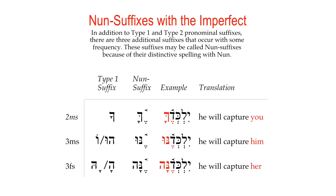Imperfect verbs are really easy to identify with pronominal suffixes, and imperfect verbs in general occur more frequently with pronominal suffixes than perfect verbs. When it comes to the addition of pronominal suffixes to the imperfect verb, there's one extra feature to study: the imperfect with noon suffixes. In addition to type 1 and alternate type 1 pronominal suffixes, there are three additional suffixes called noon suffixes because of their distinctive spelling with noon. These are: echa (2MS), enu (3MS), and ena (3FS).